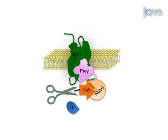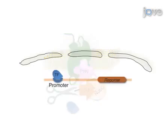These enzymes cleave after the C-terminus of CUB, releasing the transcription factor, which can then enter the nucleus and activate a reporter system, allowing for selective isolation and identification of cells in which bait-prey interactions occur.